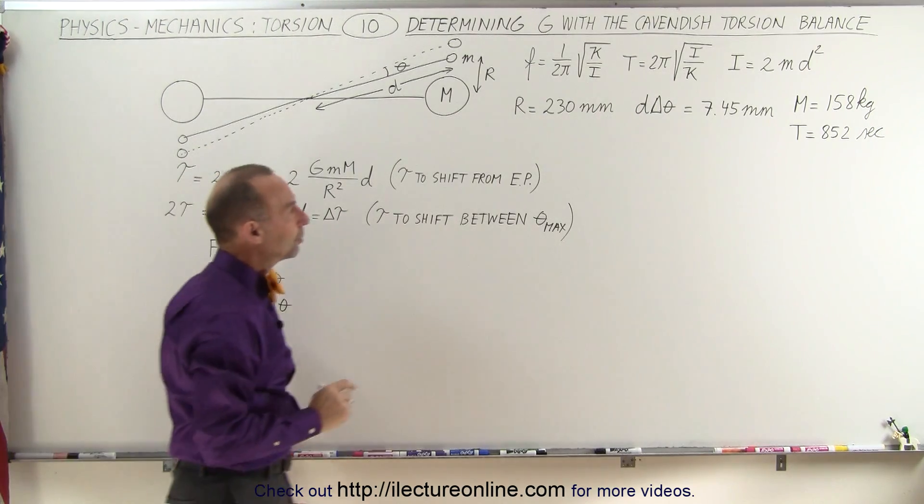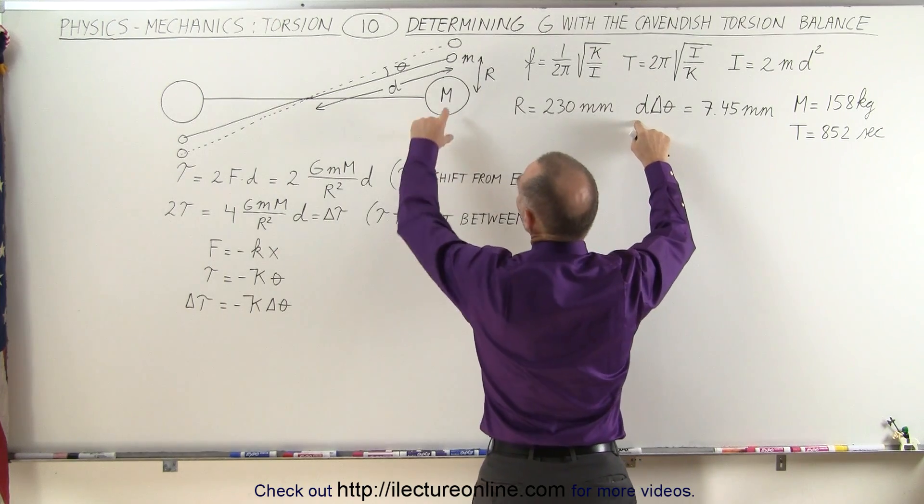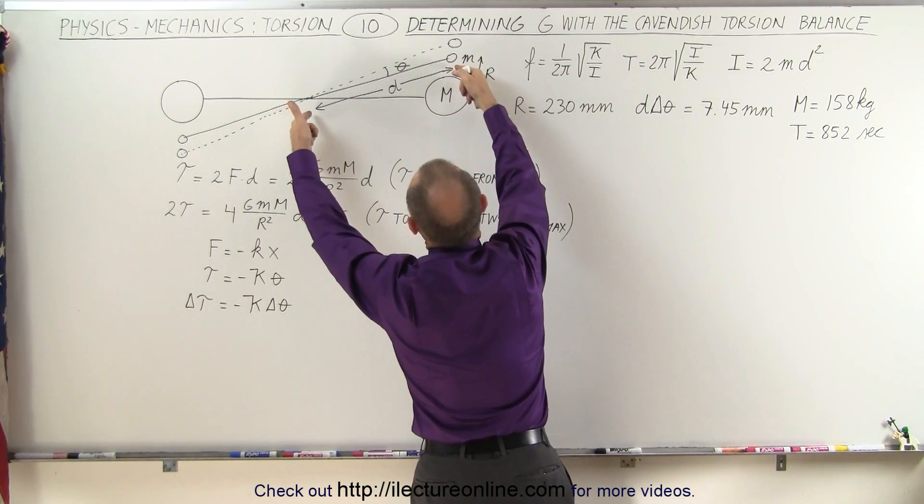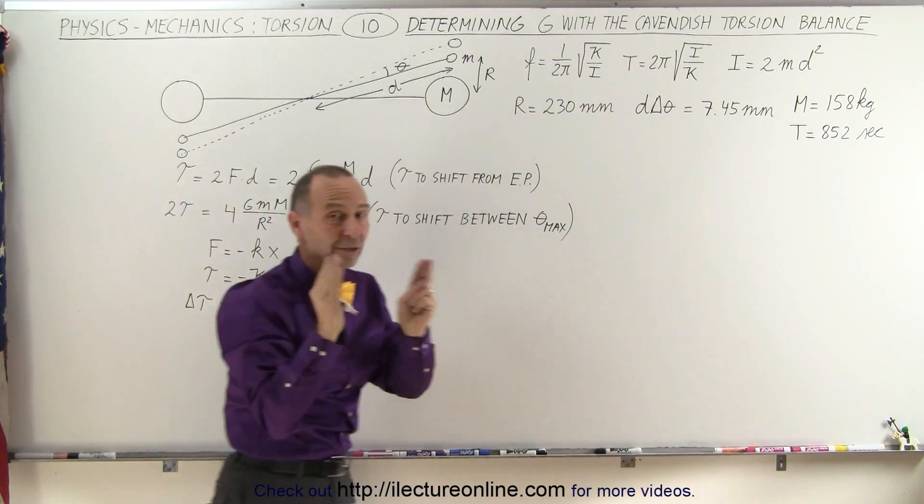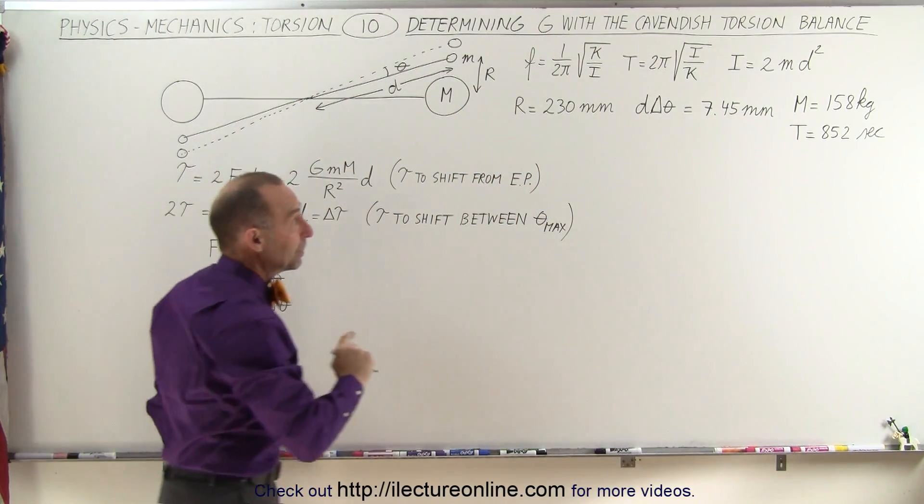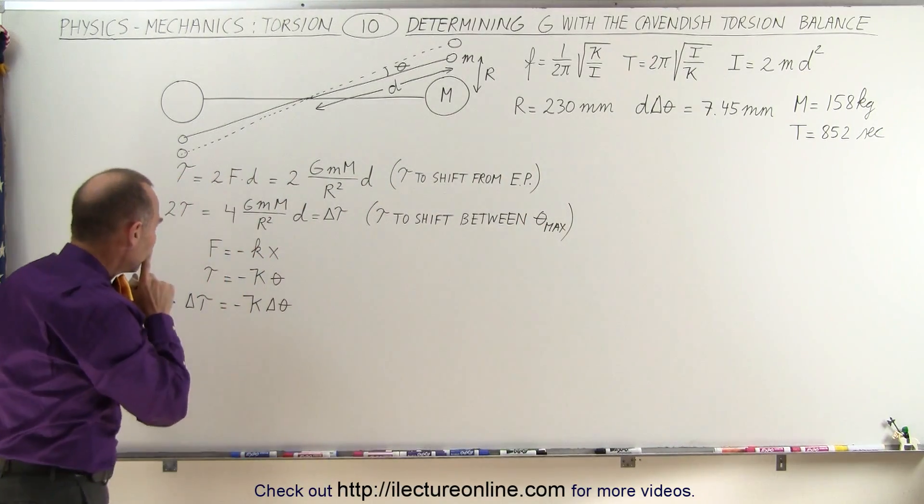And then of course, since we're looking for the change in the torque, the delta torque would then cause a delta angle. Now notice that he was able to measure the delta angle. The delta angle times the distance, that would be this distance arm right here, will give us the arc length, and the arc length was measured to be 7.45 millimeters for the total displacement.